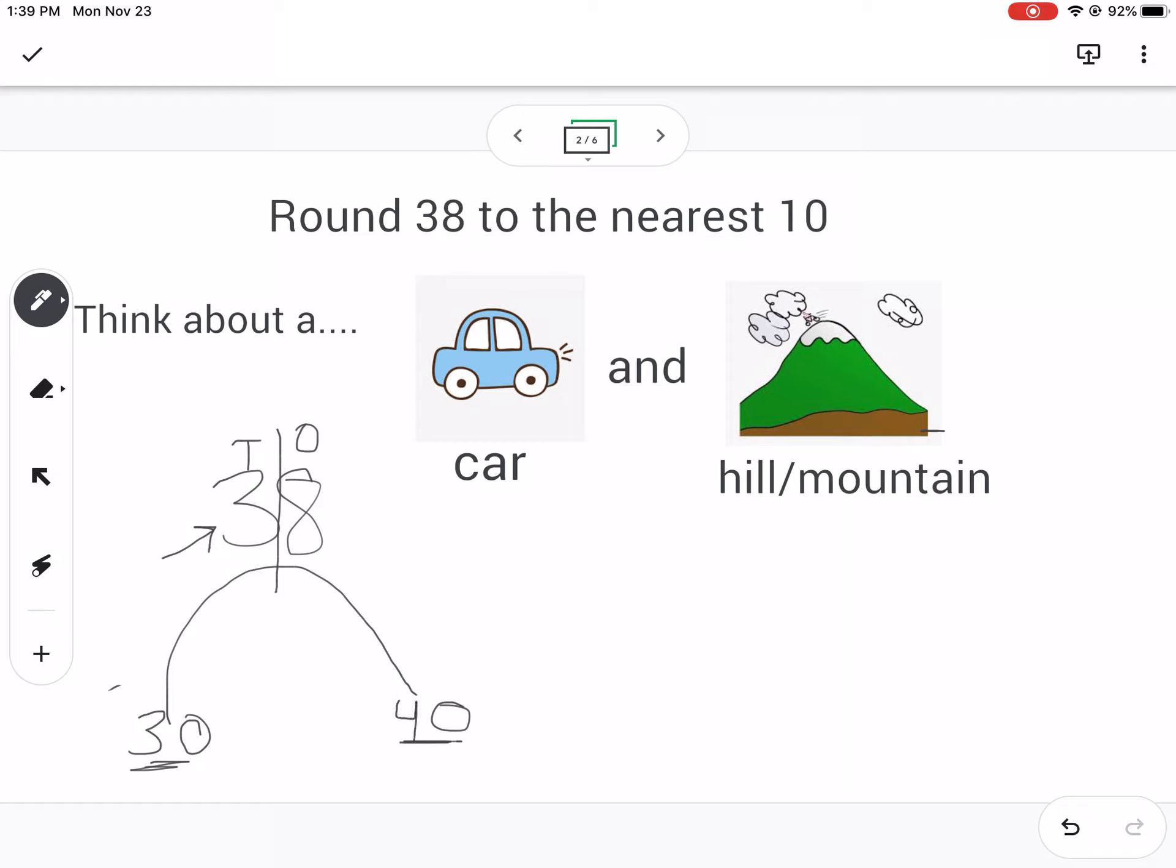And then right in the middle of 30 and 40 is 35. That's going to be the middle point. Now I just have to put this 38 somewhere. This is where my car is going to be. 38 is more than 35, so it's somewhere over here. So here's where my car is. And if I was holding the brake on the car and I let it go, that car is just going to come down to 40. It's not going to magically go back up the hill and come back down. So 38 rounded to the nearest 10 would be 40. If you lift your leg off the brake at 38, it's going to fall down to 40.